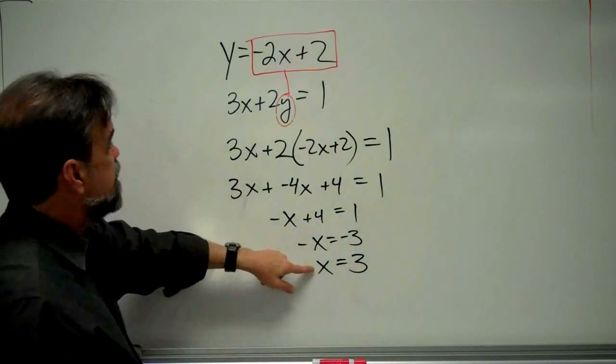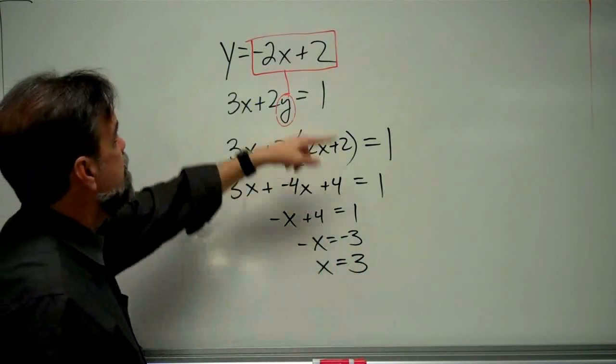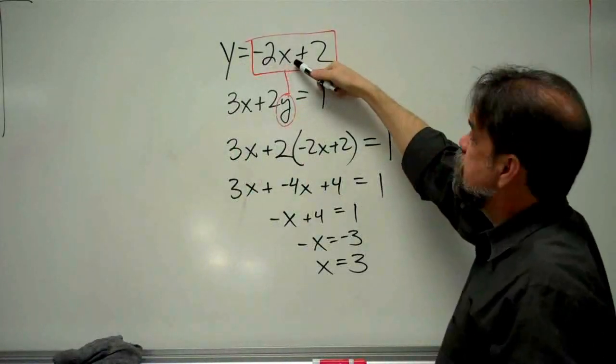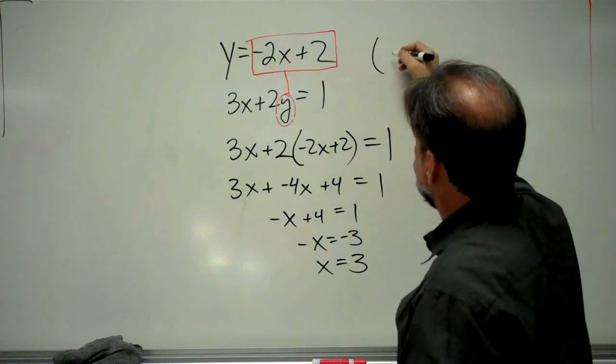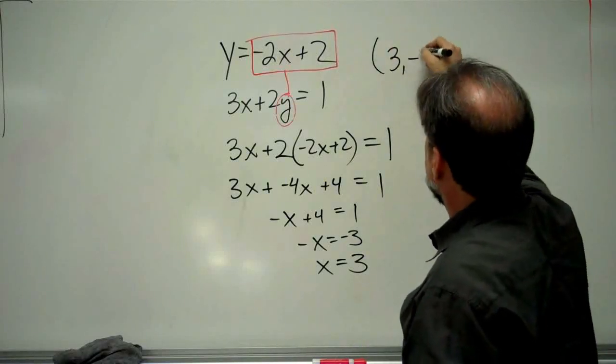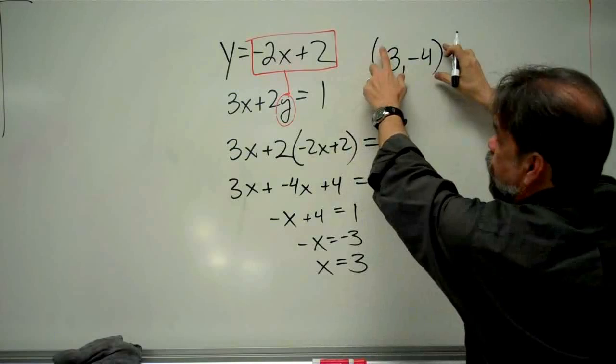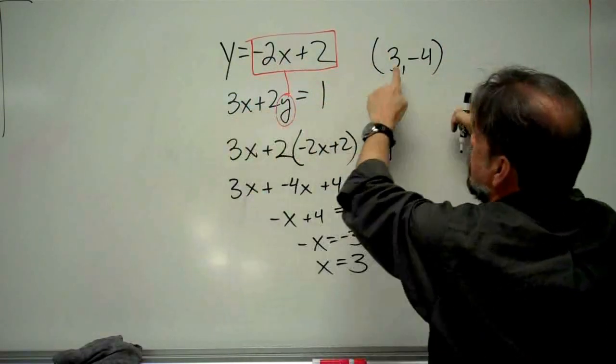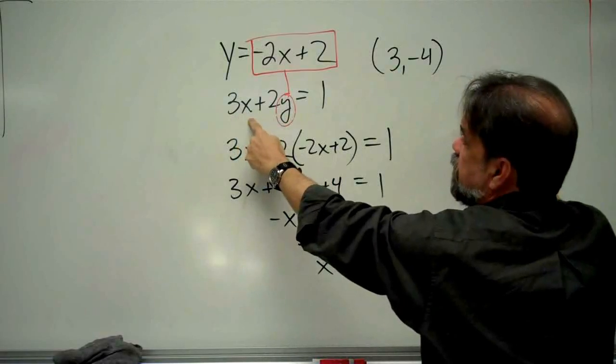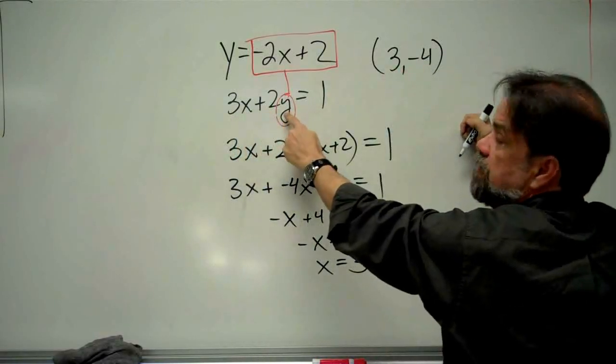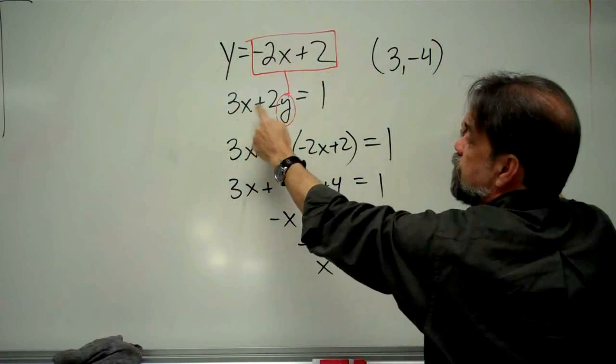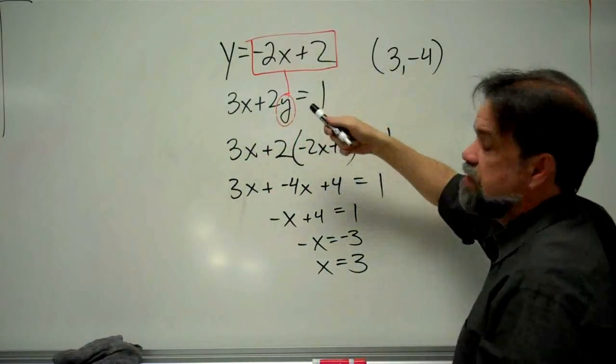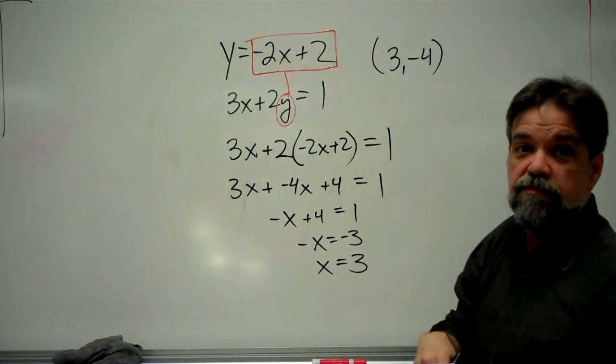And if x is 3, let me pop that back up here. And negative 2 times 3 would be negative 6, plus 2 is negative 4. So it looks like my answer is (3, negative 4). Or, let me just take this point, which I know works for this one, and see if it works for this line. 3 times 3 is 9, plus 2 times negative 4 is negative 8. And 9 plus negative 8 does equal 1. So this point is on this line, and it's also on this line, and that means it's the intersection point.